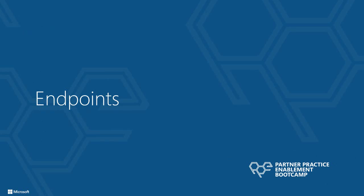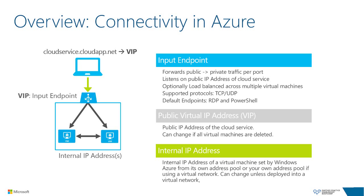All traffic from the public internet comes to Windows Azure virtual machines through the public IP address of the cloud service, which is also known as a VIP. Each cloud service has a public IP, and this IP does not change unless all of the virtual machines are either deleted or shut down at the same time from the portal or PowerShell. Shutting down or rebooting from within the virtual machine does not affect the cloud service IP. In order for traffic to reach a virtual machine, an endpoint must be configured for a specific port such as 80 for HTTP, 443 for SSL, etc.